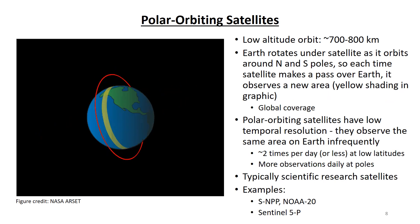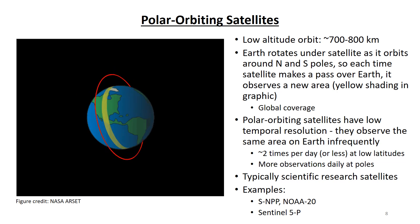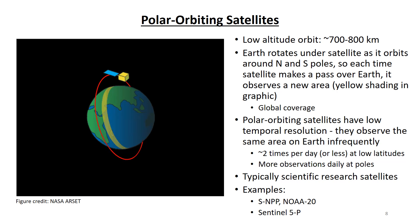Polar orbiting satellites are also called low Earth orbiting, or LEO satellites, because they are in a low altitude orbit, typically around 700 to 800 kilometers above the Earth's surface. As the name indicates, polar orbiting satellites orbit around the north and south poles. The Earth rotates under the satellite, so every time the satellite makes a pass over the Earth, it observes a new area, as shown by the yellow shading in the animated graphic. Polar orbiting satellites have global coverage, but they have relatively low temporal resolution — typically they observe the same area no more than one to two times per day at low latitudes, sometimes less. There are more observations per day in polar regions because the satellite orbits overlap at high latitudes. Because of their global coverage, polar orbiting satellites are typically scientific research satellites making global measurements. Examples include NOAA's SNPP and NOAA-20 satellites, and the European Space Agency's Sentinel-5 Precursor Satellite.